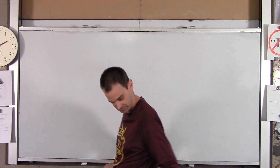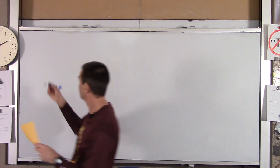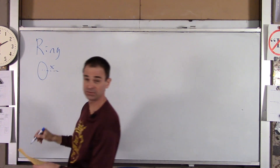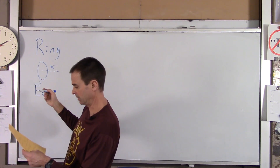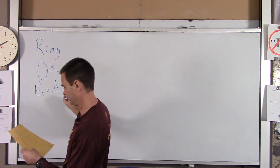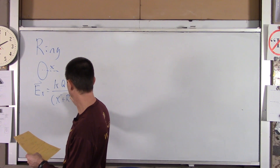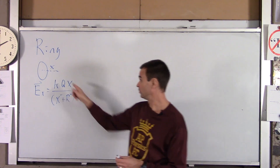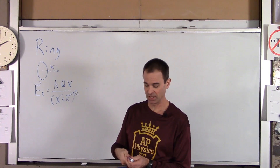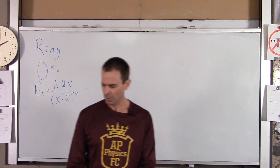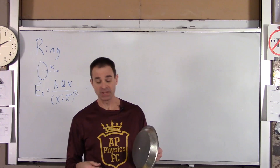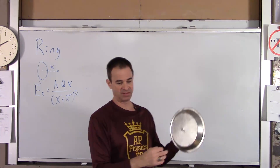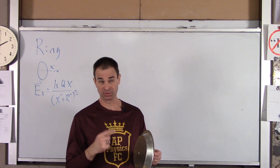For a ring, if you are some distance x from it, the equation for electric field is KQx over the quantity — the distance from the ring to this point — to the three-halves. We're going to start with that, and we're going to take our disk and break it down into concentric rings. Since we know the electric field of one ring, we'll build this up by looking at different rings, finding the electric field of each, and then vectorially adding the electric field created by each thin ring.